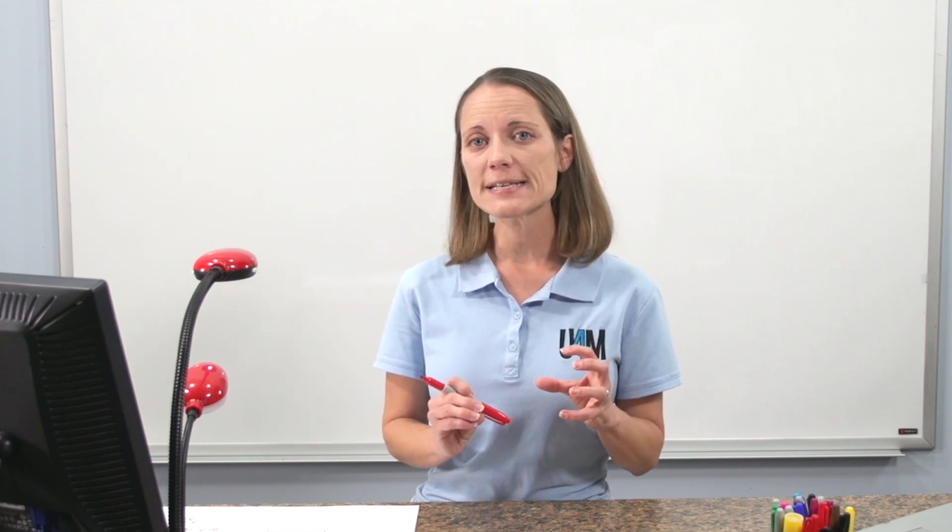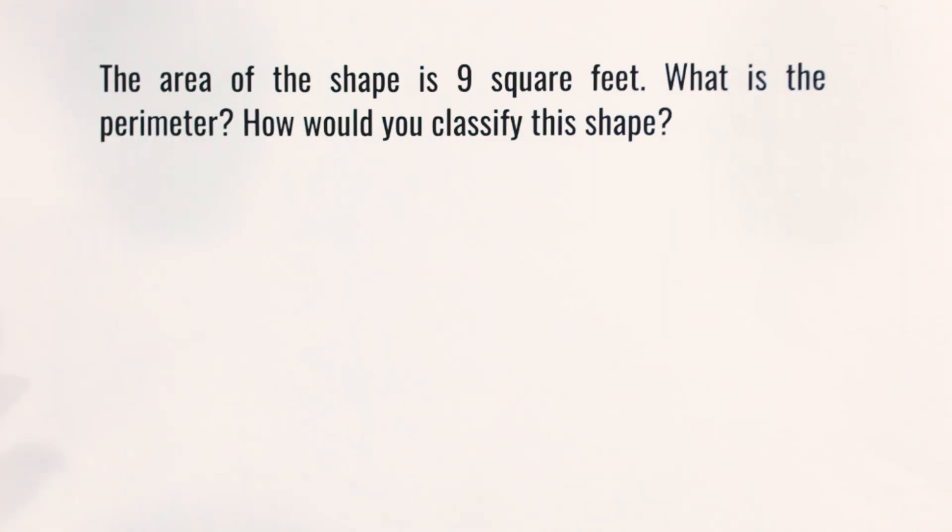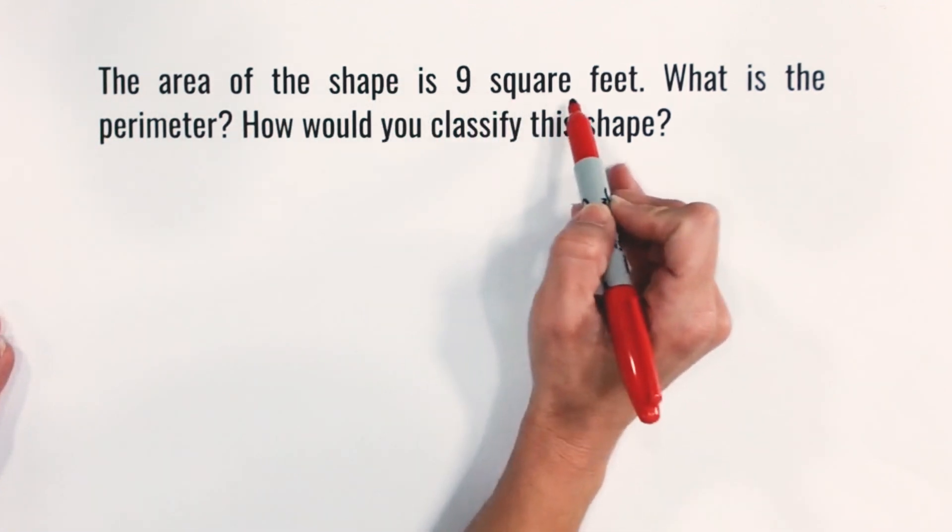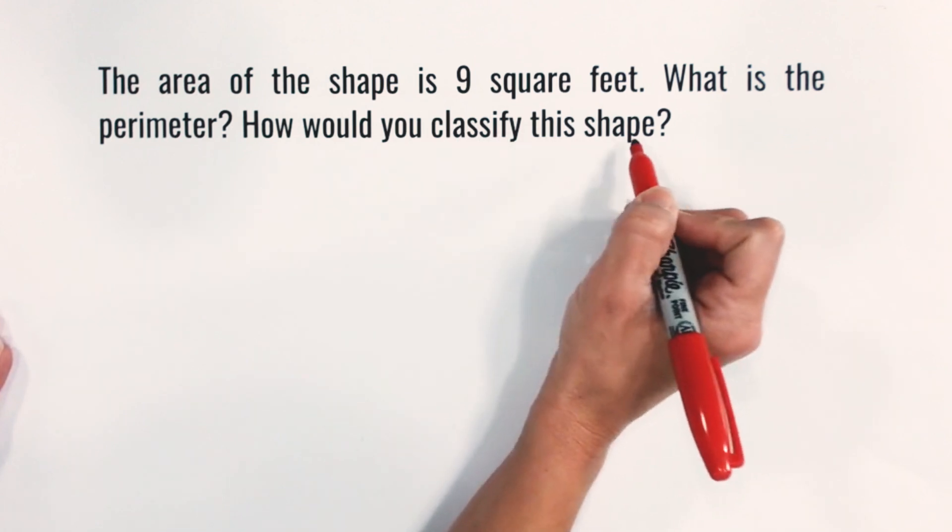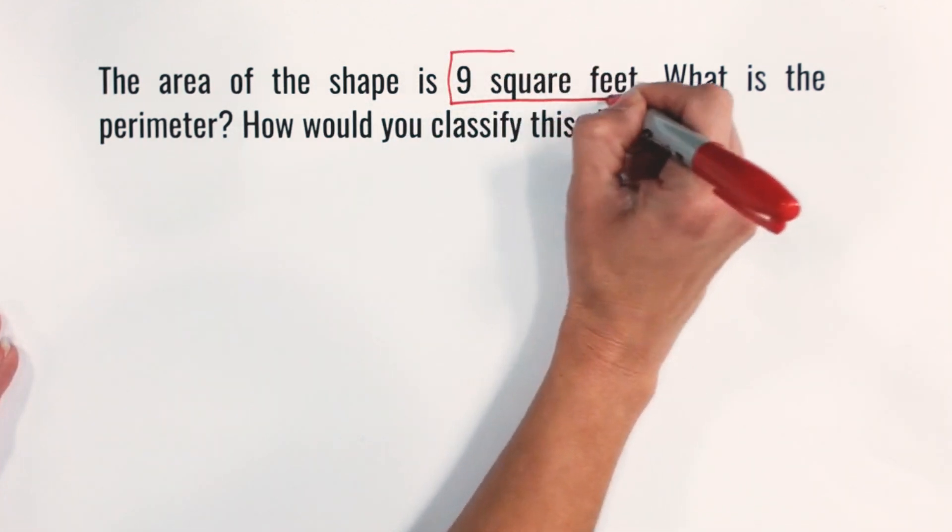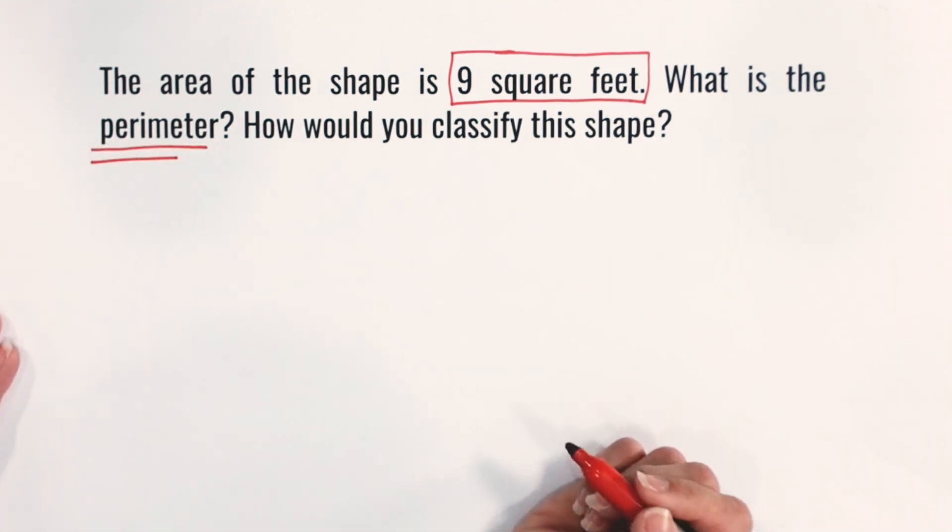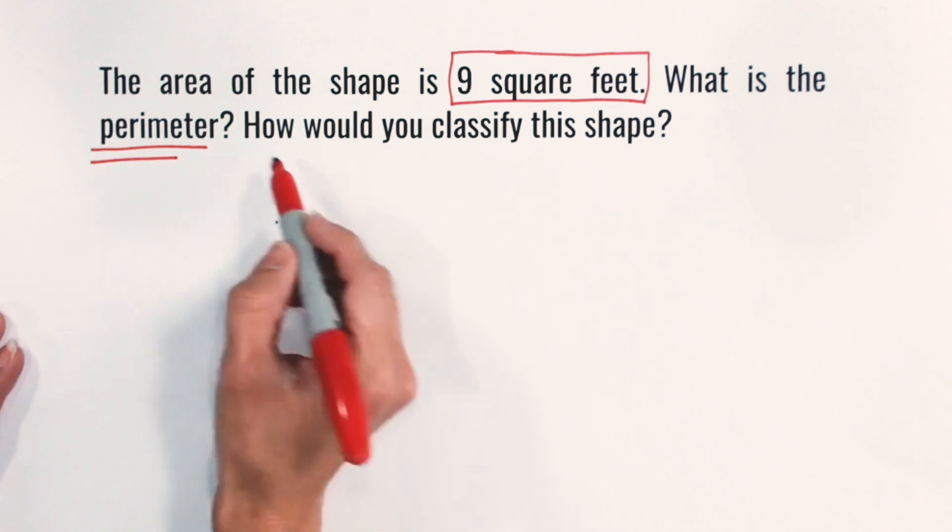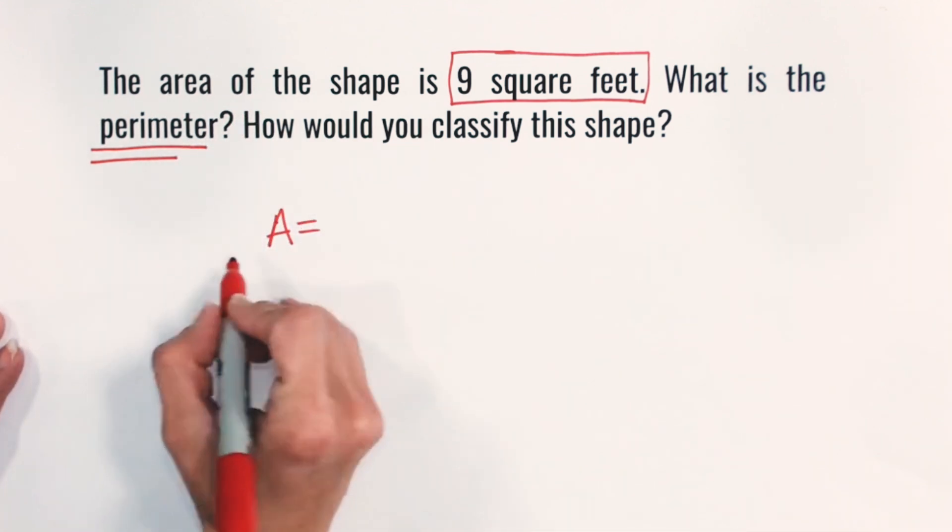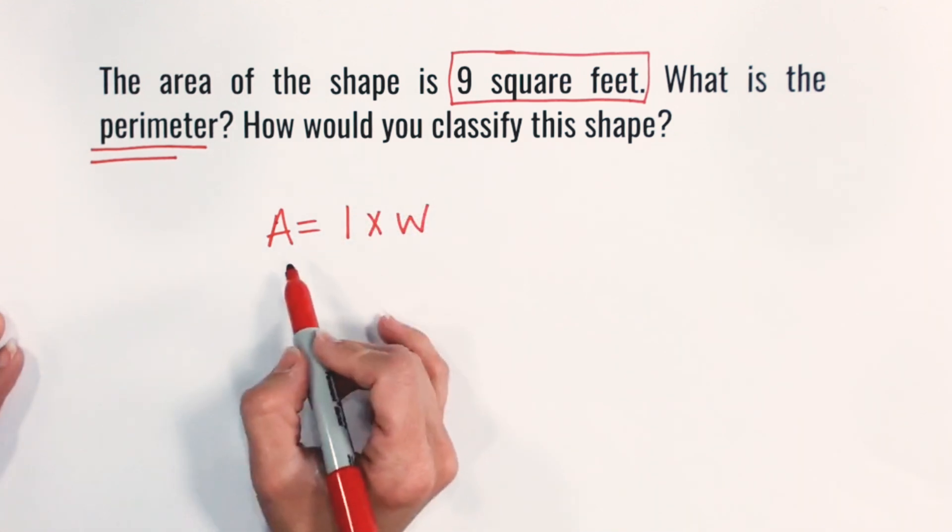This type of problem, since there are so many pieces and so many of our previous skills that we're applying, we really need to have a lot of practice. So give your student as much practice as possible finding out these mystery numbers. So let's take a look at one more example. In this example, it says, the area of the shape is 9 square feet. What is the perimeter? How would you classify this shape? So we have some different questions here. So we know the area of the shape is 9 square feet. So we need to first find the factors of 9. And then we're going to figure out what the perimeter is. So we know that we have 9 square feet and we're working with rectangles. So that area formula is length times width. And in this case, the area is 9. So we have to find the factors of 9 first.